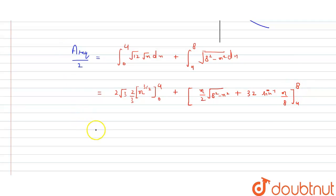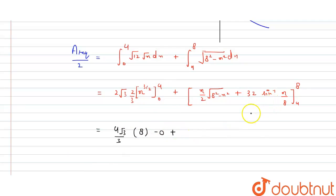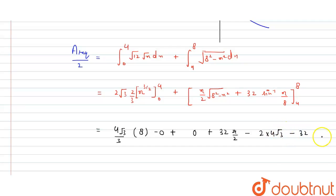Now we put in the limits and simplify. The parabola part gives 2√3 · (2/3) · [4^(3/2) − 0] = (4√3/3) · 8 = 32√3/3. For the circle part at x = 8: sin⁻¹(1) = π/2, and at x = 4: √(64 − 16) = √48 = 4√3, and sin⁻¹(1/2) = π/6.